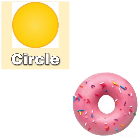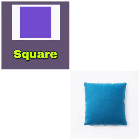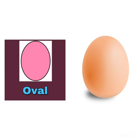It's a circle donut. It's a rectangle whiteboard. Heart. It's a triangle watermelon. It's a square pillow. It's an oval egg. It's a heart balloon.